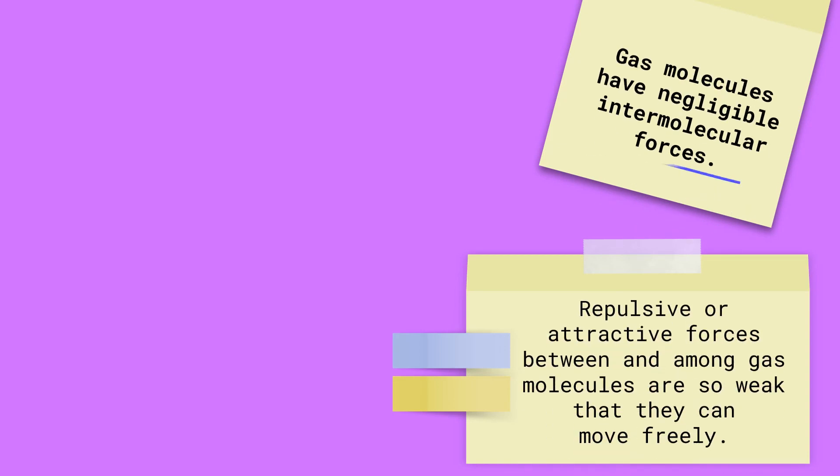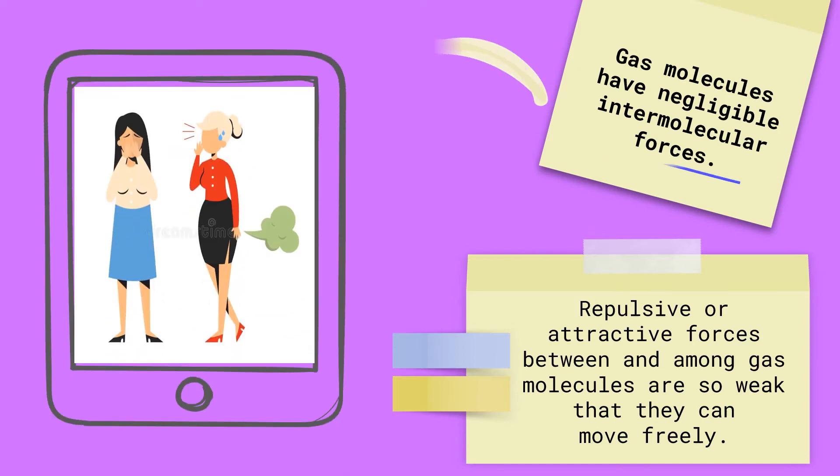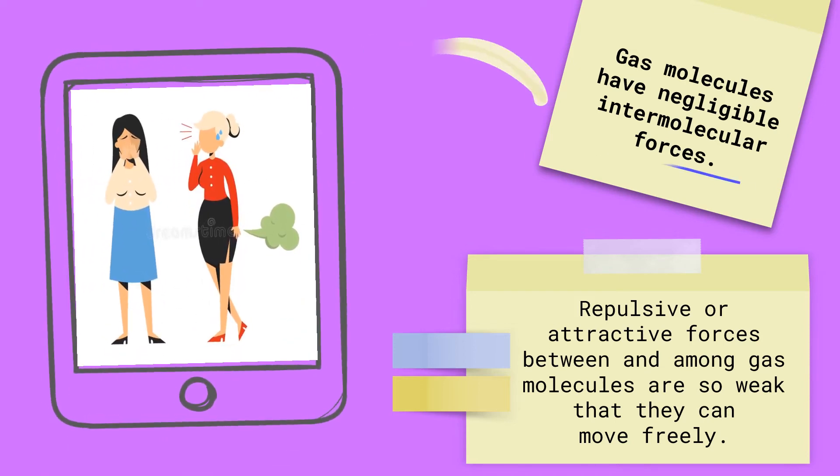Repulsive or attractive forces between and among gas molecules are so weak that they can move freely. This is the reason why the smell of something in the same area is easily scattered throughout that area. Once someone passes gas in an open space, the smell is automatically scattered and can be smelled all around the area.